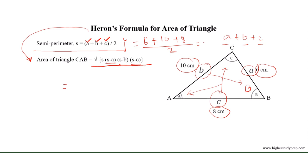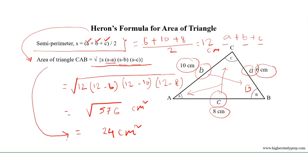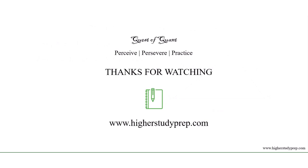With a equals 6, b equals 10, and c equals 8 centimeters, the semi-perimeter s equals (6 plus 10 plus 8) divided by 2 equals 24 divided by 2 equals 12 centimeters. Substituting into Heron's formula: s minus a equals 6, s minus b equals 2, s minus c equals 4. This results in √576 equals 24, so the area of triangle CAB equals 24 centimeters square.